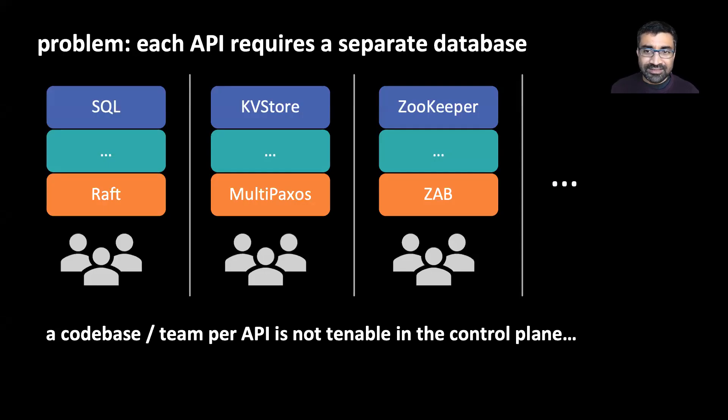Now the problem we have is each such API typically requires an entire separate system to be built. In the Facebook data plane, for example, we have a SQL database, a key value store called ZippyDB, a zookeeper service, and so on. We can't replicate this approach in the control plane, because implementing and operating even a single zero dependency system is quite difficult. So we are at an impasse here. We need multiple APIs in the control plane, but at the same time, we can only build and operate a single database.